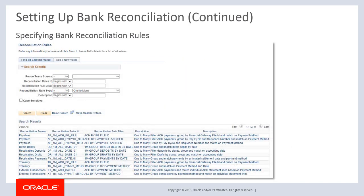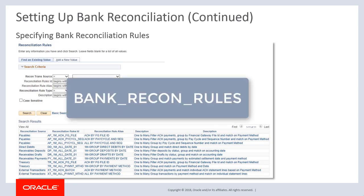As the second step to setting up bank reconciliation, you need to add reconciliation rules to associate with tolerances. To review PeopleSoft delivered rules and identify the ones that meet your business needs, access the Reconciliation Rules component. Using this component, you can review, update, or add reconciliation rules for each individual transaction source. You can also run the delivered query, bank recon rules, to review the aggregation criteria, match criteria, and filter criteria for each rule.